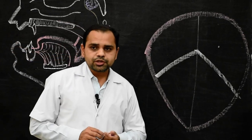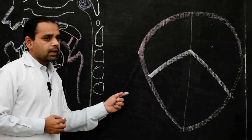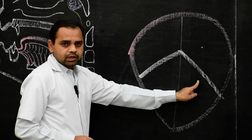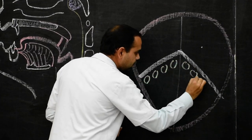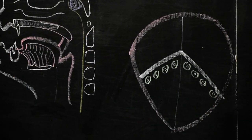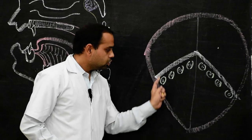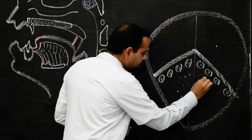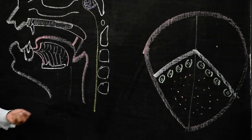Papillae are basically projections of the lamina propria of the mucous membrane, covered by epithelium. There are basically four types of papillae present in the oral part. The first type is present just below the V-shaped sulcus terminalis, arranged in a V-shaped row. These are known as circumvallate papillae. They are the largest in size, about 1 to 2 mm in diameter, and about 8 to 12 in number. The second type is present on the entire dorsum of the oral part of the tongue and is known as filiform papillae. They are the narrowest and most numerous, and give the tongue its velvety appearance.